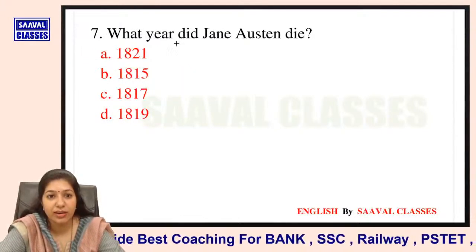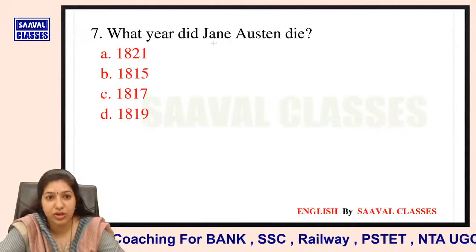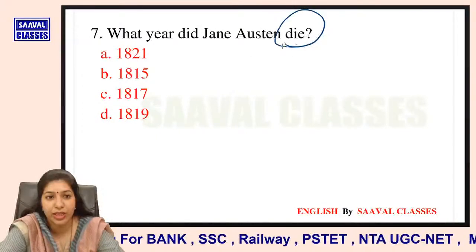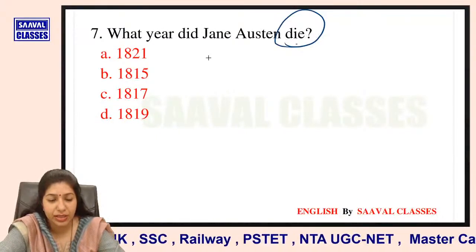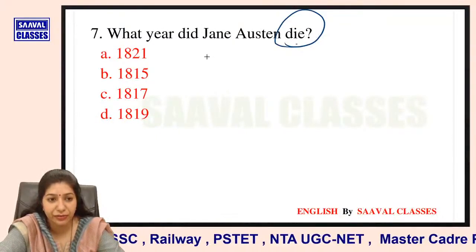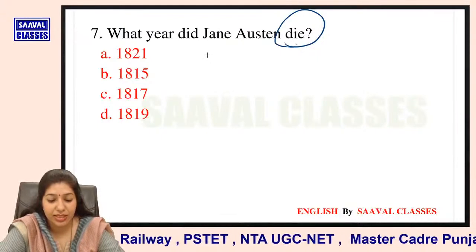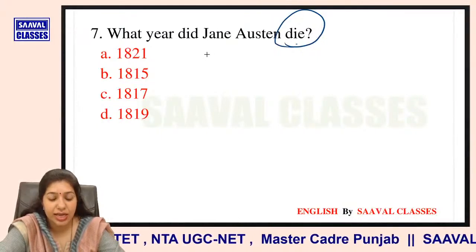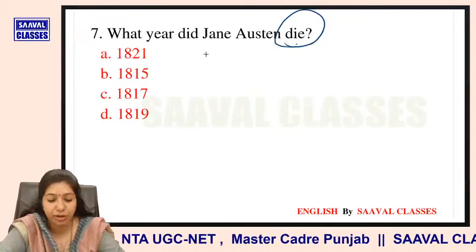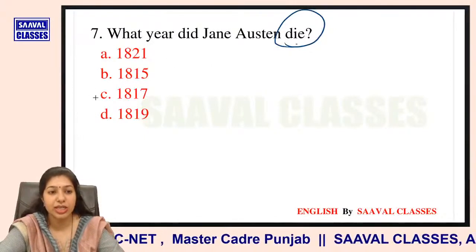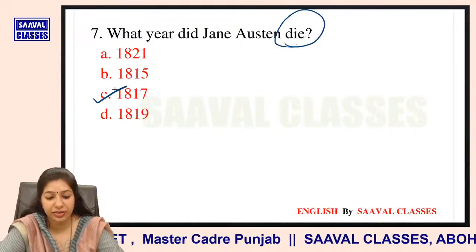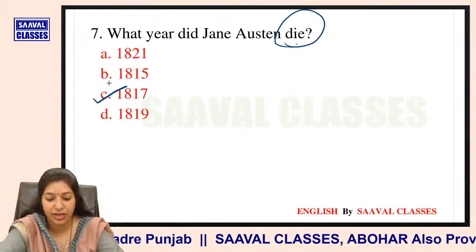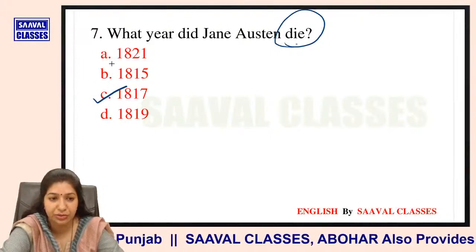Question number 7: What year did Jane Austen die? Options are 1821, 1815, 1817, ya 1819? She died in 1817. Very right — you all are giving me the right answer. Absolutely right.